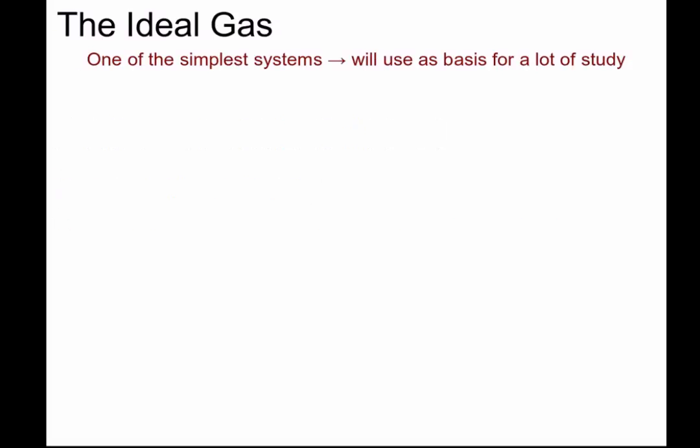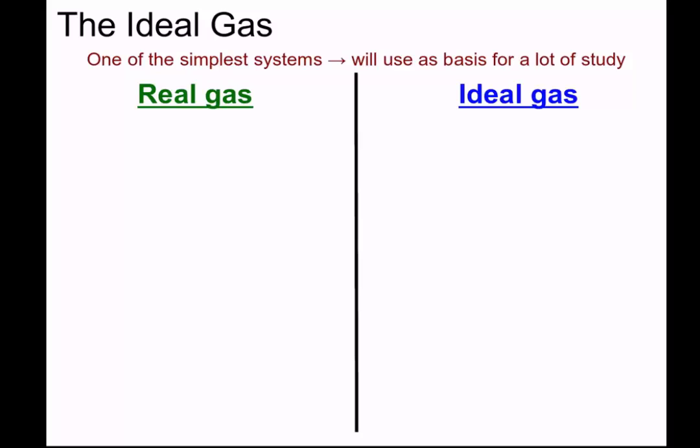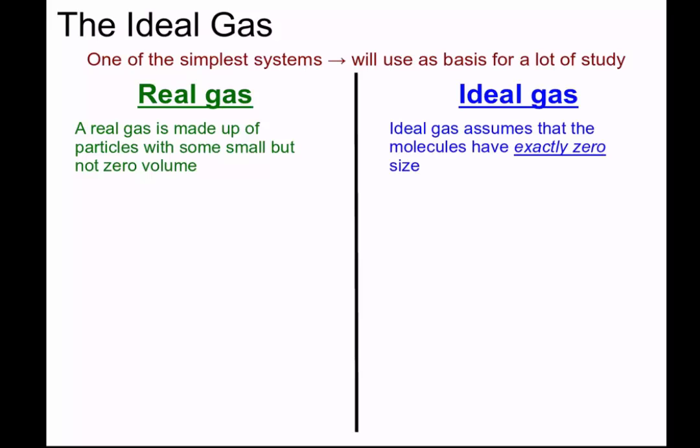In order to understand the ideal gas approximation it's probably best to compare it to a real gas such as the oxygen or nitrogen in the room around you. In a real gas the gas is made up of particles with some small but not exactly zero volume. In the ideal gas approximation we assume that the molecules have exactly zero size.